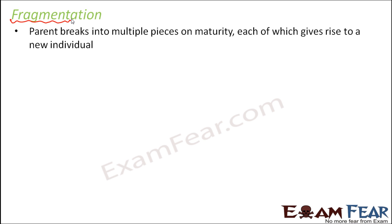Unlike fission, where the parent splits into halves each receiving all its parts, in fragmentation the parent breaks into different pieces from anywhere and each of these pieces gives rise to a new individual altogether. This breaking of the parent happens on its own — nobody externally breaks it; the parent itself breaks as soon as it becomes mature. Each piece is known as a fragment, and that is why this process is called fragmentation.